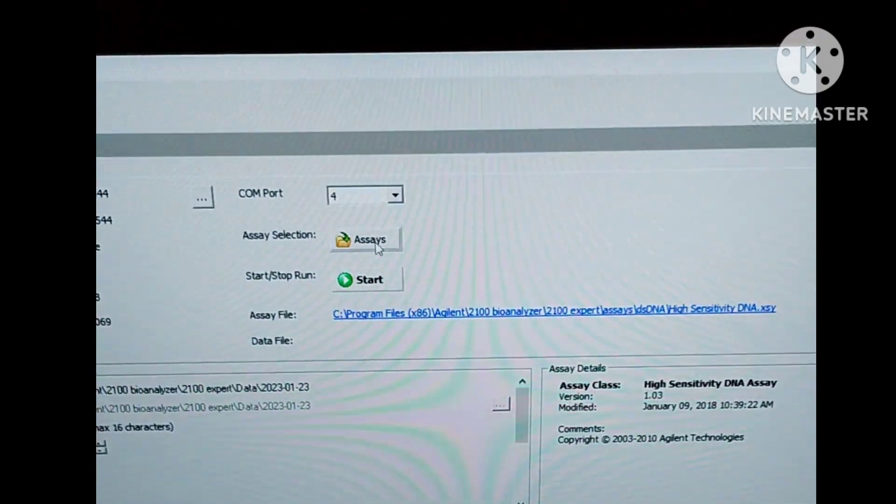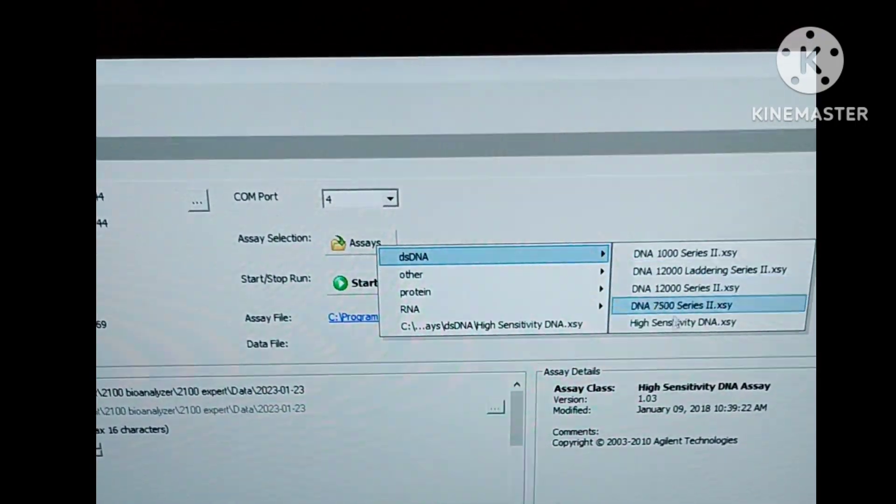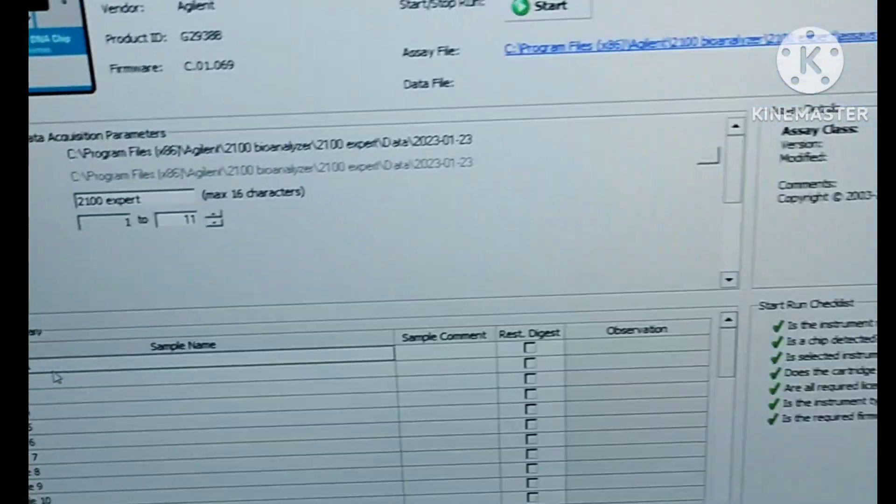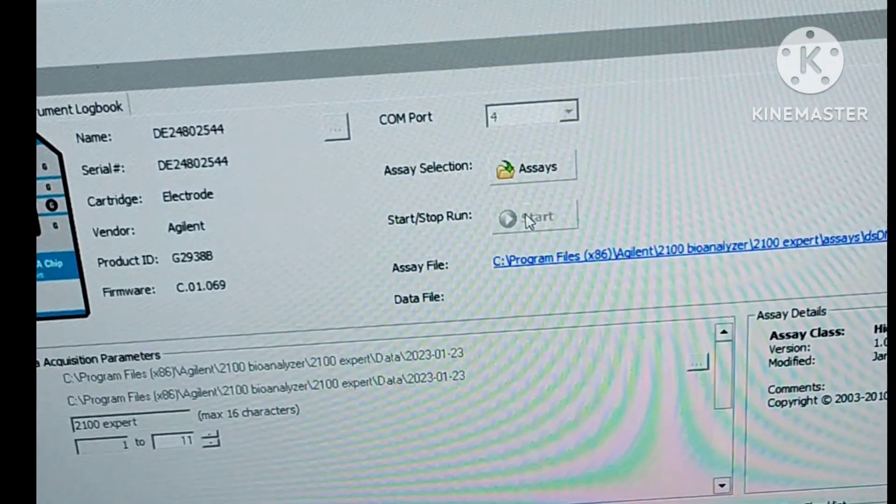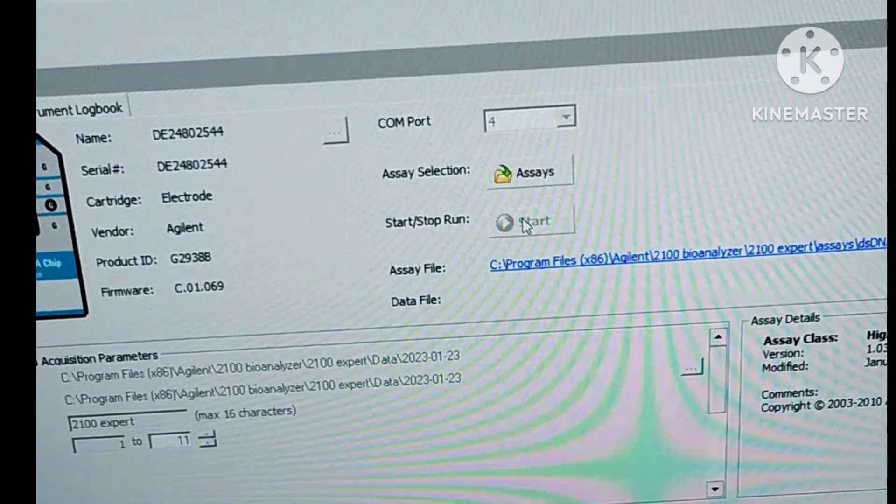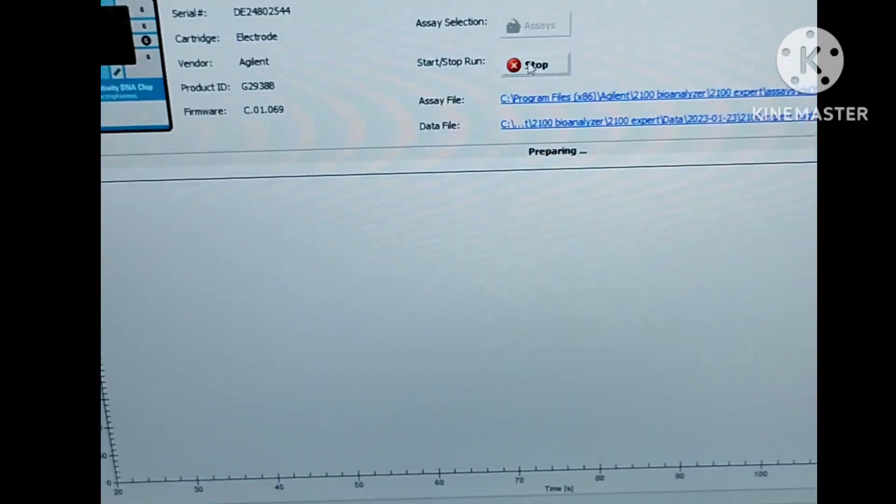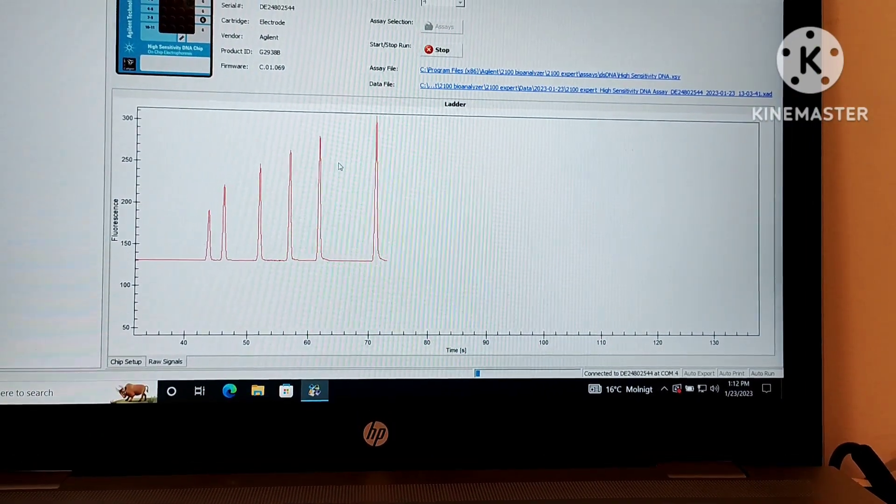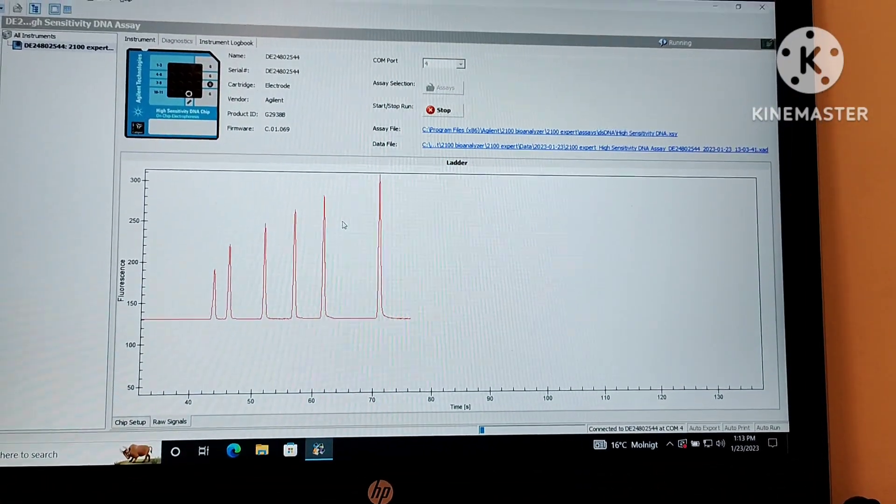Close the lid. Now you can see the software is detecting the chip. Use the assay—go for high sensitivity if you are using high sensitivity; otherwise, choose whatever you are using. Here you can write your sample name as well, and after you're done, just start the software. This is the reading for the ladder.